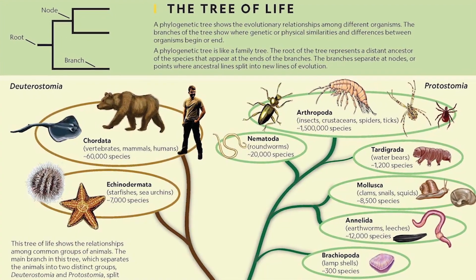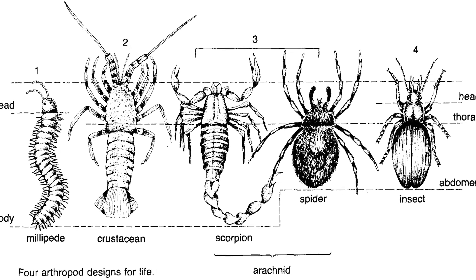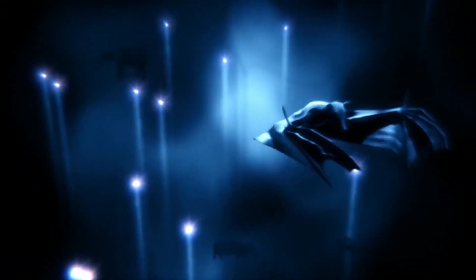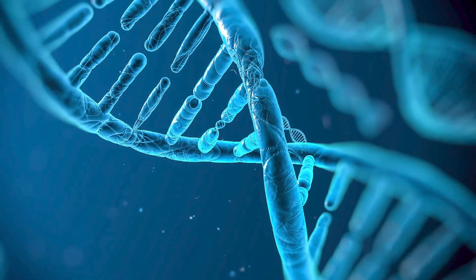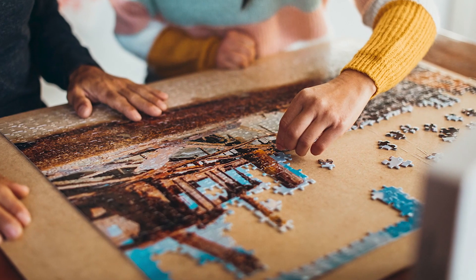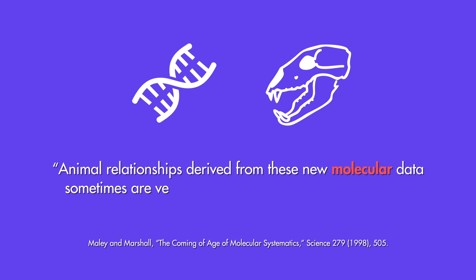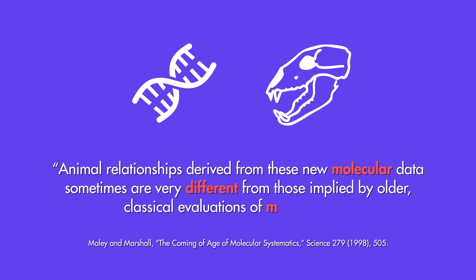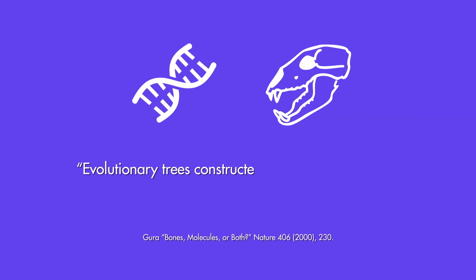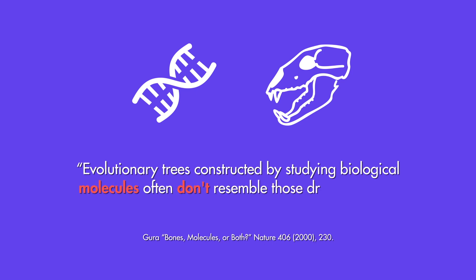So far we've only looked at trees based on gene studies. However, the argument from homology concerns not just genetic but also morphological similarities in different animals. If all organisms are related, then conclusions drawn from genetic homology should be congruent with those drawn from morphological similarities — like a jigsaw puzzle that can be assembled by either the shape or the colors of the pieces, ultimately yielding the same picture. However, that's exactly what you don't get. As noted in Science, animal relationships derived from new molecular data sometimes are very different from those implied by older classical evaluations of morphology. Similarly, Nature observed that evolutionary trees constructed by studying biological molecules often don't resemble those drawn up from morphology.